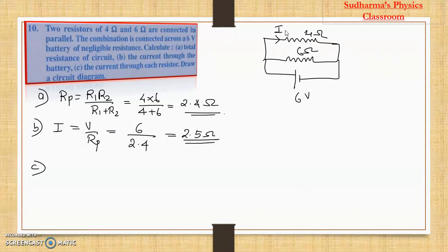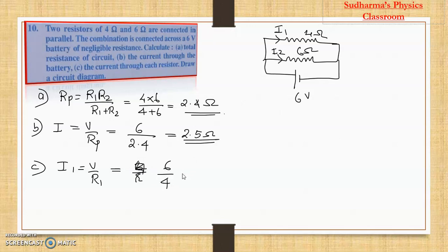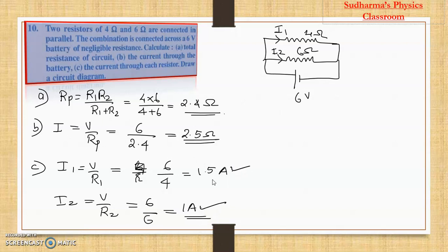Now, the current through each resistor: name current through 4 ohm as I1 and current through 6 ohm as I2. In a parallel combination, the potential difference is the same for all resistors — so the same 6 volt is given to both. I1 = V / R1 = 6 / 4 = 1.5 amperes. I2 = V / R2 = 6 / 6 = 1 ampere. When you add them: 1.5 + 1 = 2.5 ampere, which matches the total current. This cross-verification tells us our answer is correct.